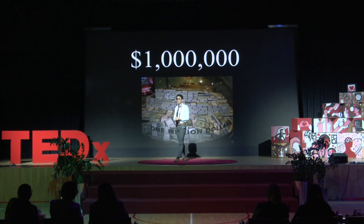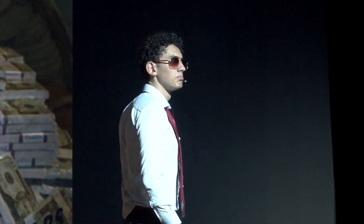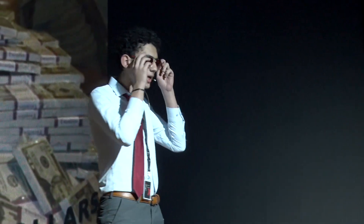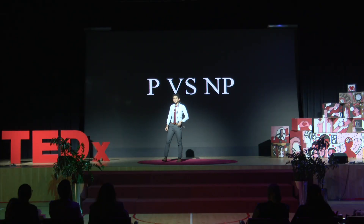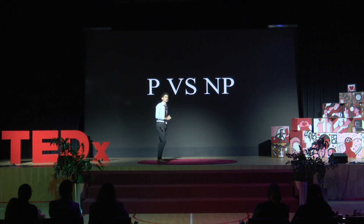One million dollars may sound like a lot of money, yet compared to the sheer difficulty and scale of this problem, it's a puny sum — the P versus NP problem. But what is the P versus NP problem? At its core, it poses a mind-twisting question: if it's easy to confirm a solution, is it equally simple to find that solution in the first place? Why is this considered the Mount Everest of unresolved puzzles in computer science?